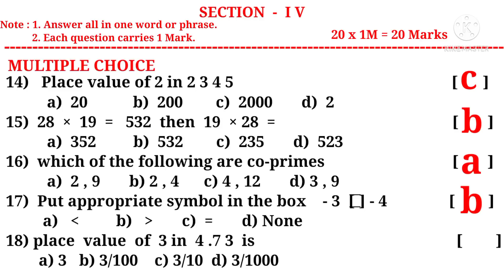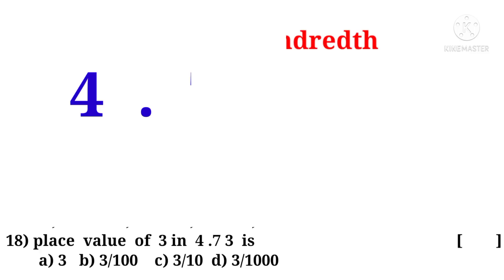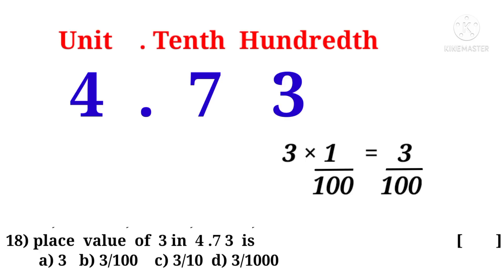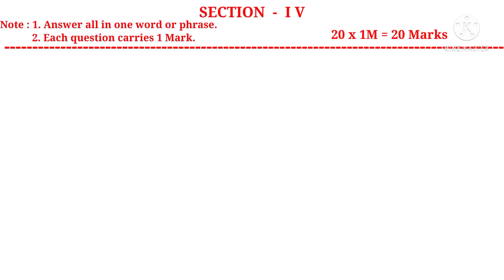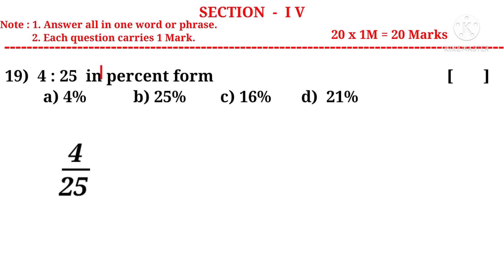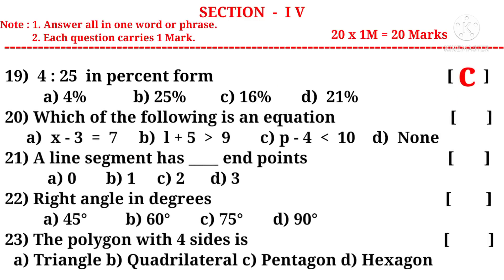Eighteen: Place value of 3 in 4.73 is. Write 4.73 and its place values on the above. Observe that 3 is in hundredth space. So 3 into 1 by 100 is equal to 3 by 100. So the correct choice is B. Now 19th question: 4 is to 25 in percent form. 4 is to 25 can be written as 4 by 25. Percent means into 100. On simplification by 25, 25 to 25, so 4 into 4 is 16 percent. So the correct choice is C.